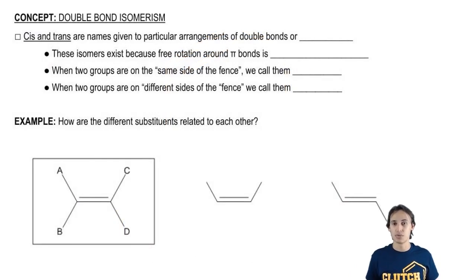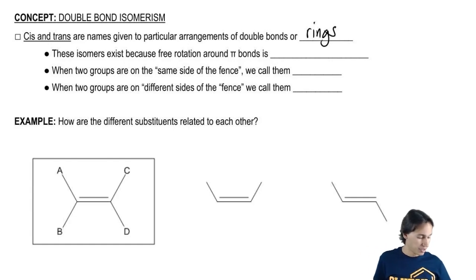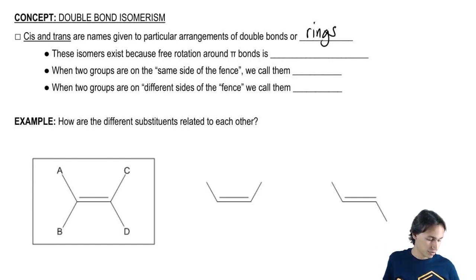I'm sure you've heard of the words cis and trans before. Cis and trans are names given to particular arrangements of double bonds or of rings. So basically any time that you have no free rotation, you're going to have the possibility for cis and trans.